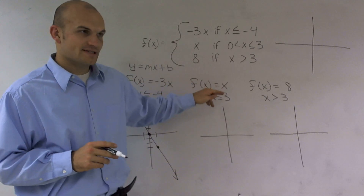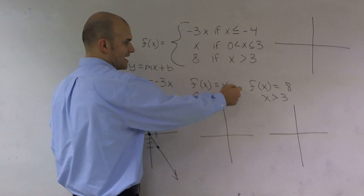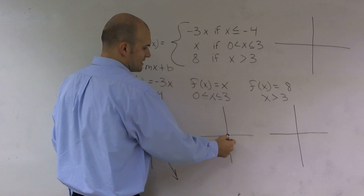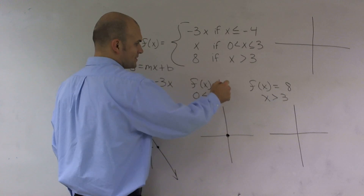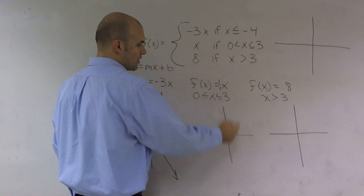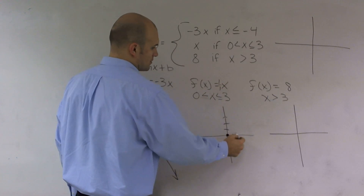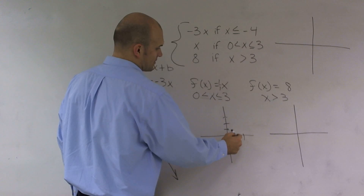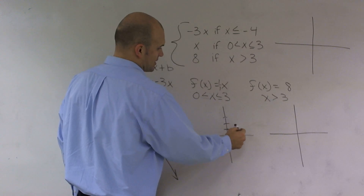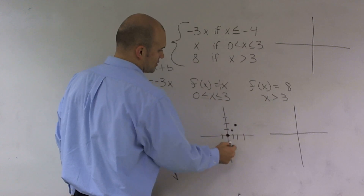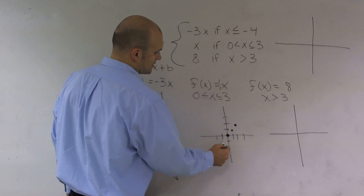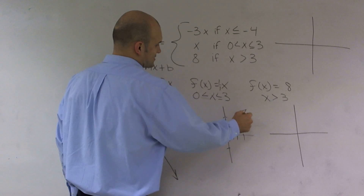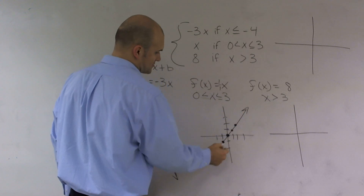To graph this equation, f(x) = x, I have a y-intercept of zero, but now my slope is one over one. So I go up one to the right one, up one to the right one. I could also go to the left, down one to the left one. So my graph is going to look like that for this one.